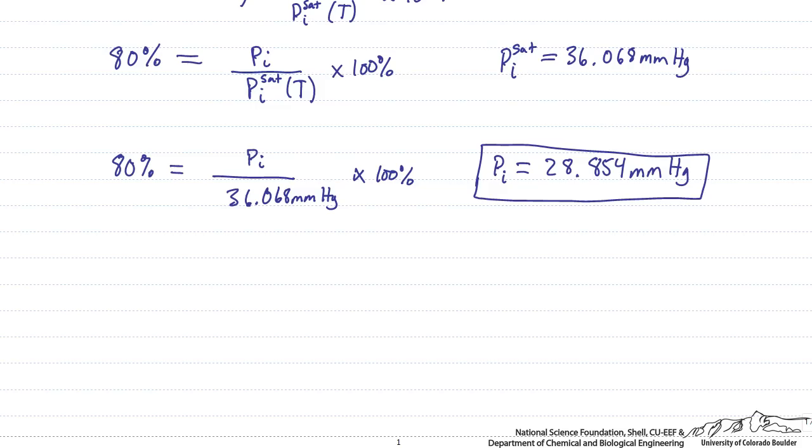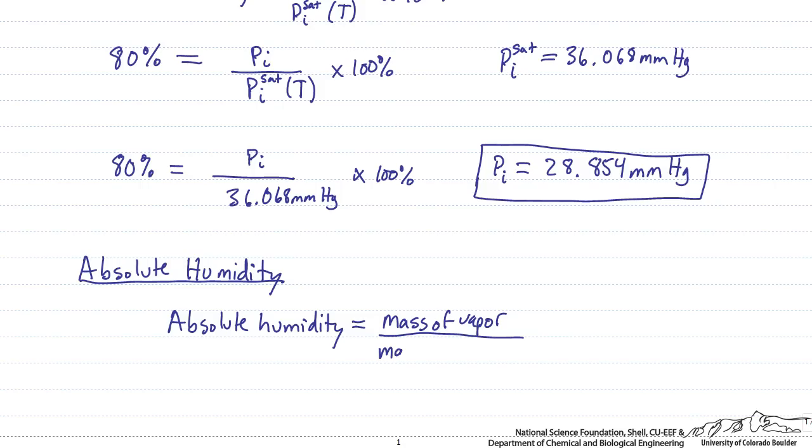So let's use this number to calculate one other prominently used form of humidity, the absolute humidity. So the absolute humidity of a system is defined as the mass of vapor in the system divided by the mass of dry gas.